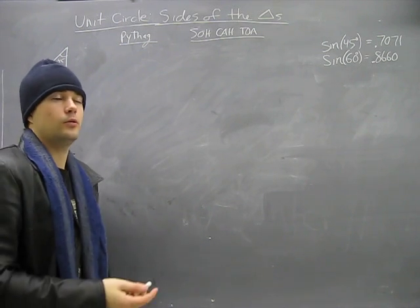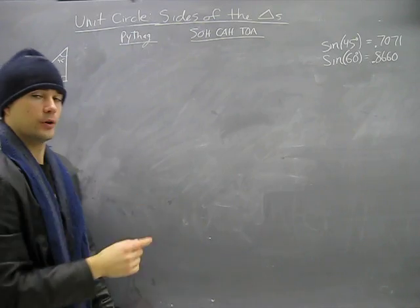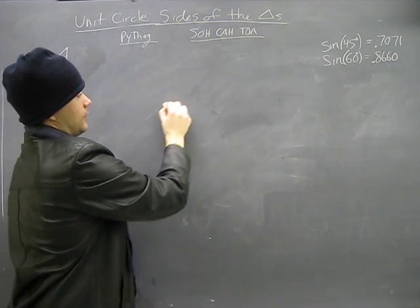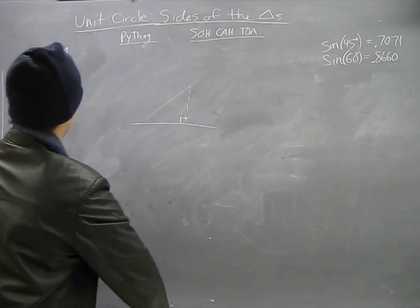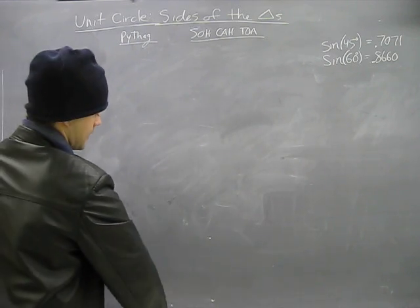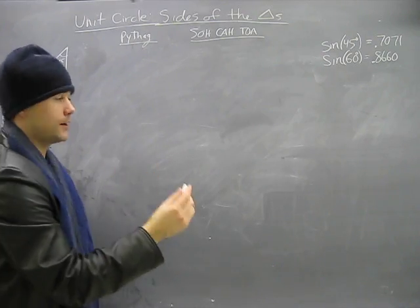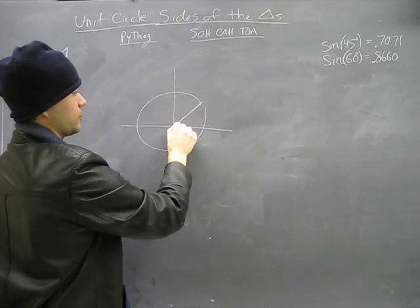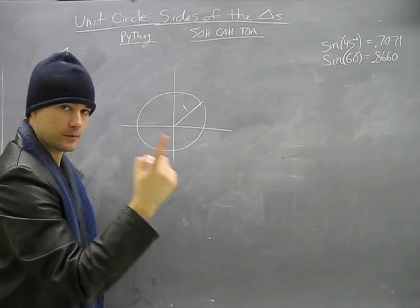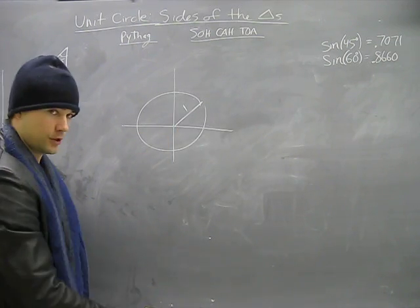Things we need to know: we're dealing with right triangles because the angle drops down to the axis, creating a 90 degree angle. And the hypotenuse is 1, because we're dealing with the unit circle. It doesn't matter where it is. The hypotenuse will always be 1 for us to determine the ratios.